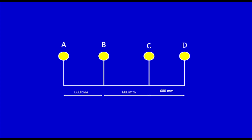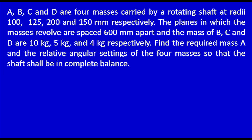Now I will proceed to the table to calculate force and couple values. From the displacement diagram, I have already determined the order of the planes as A, B, C, and D, which I will mark in column 1 of the table. I can find the mass and radius values from the problem statement. The masses are M_B equal to 10 kg, M_C equal to 5 kg, M_D equal to 4 kg, and M_A is an unknown value.